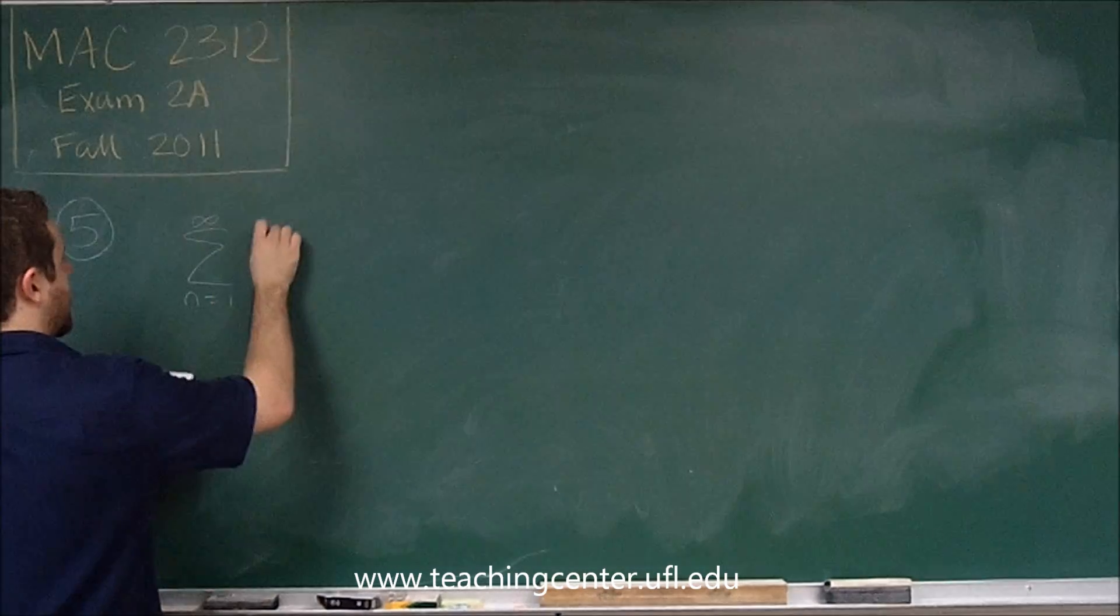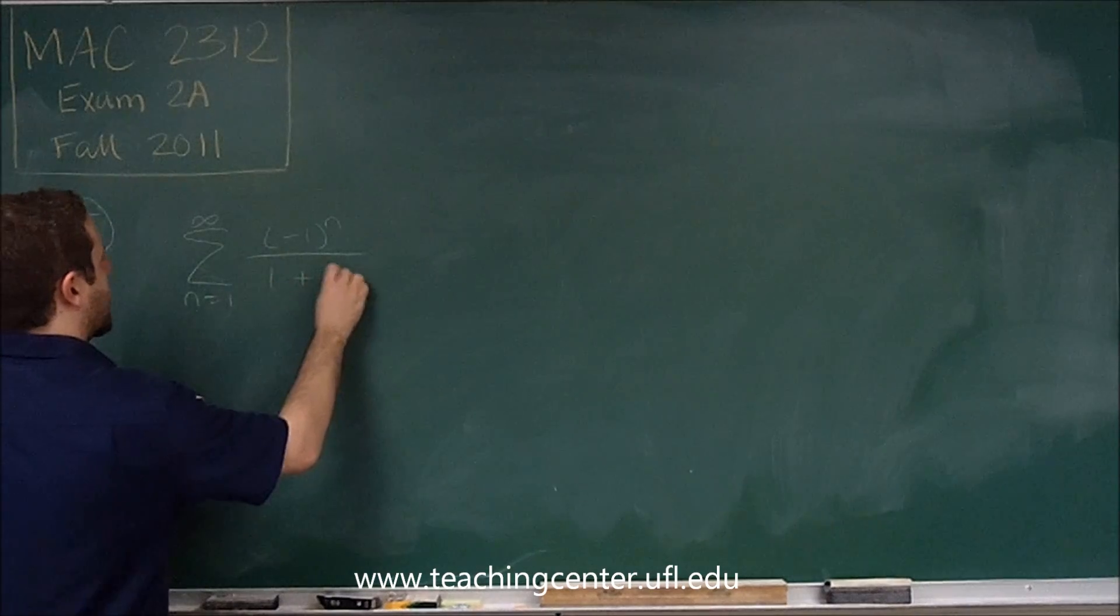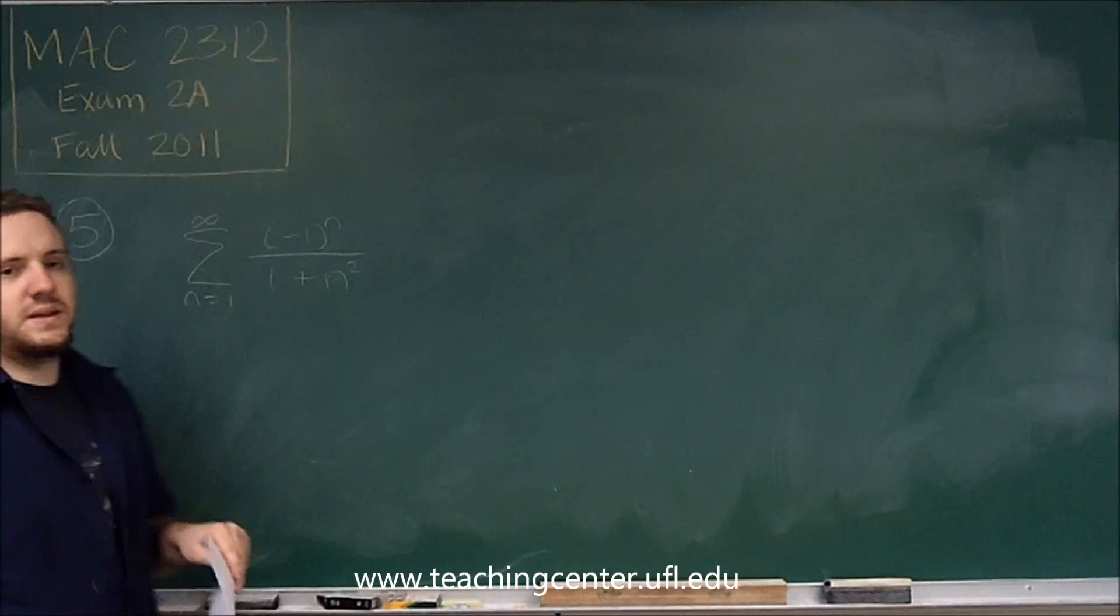We have from n equals 1 to infinity, (-1)^n over 1 plus n squared.